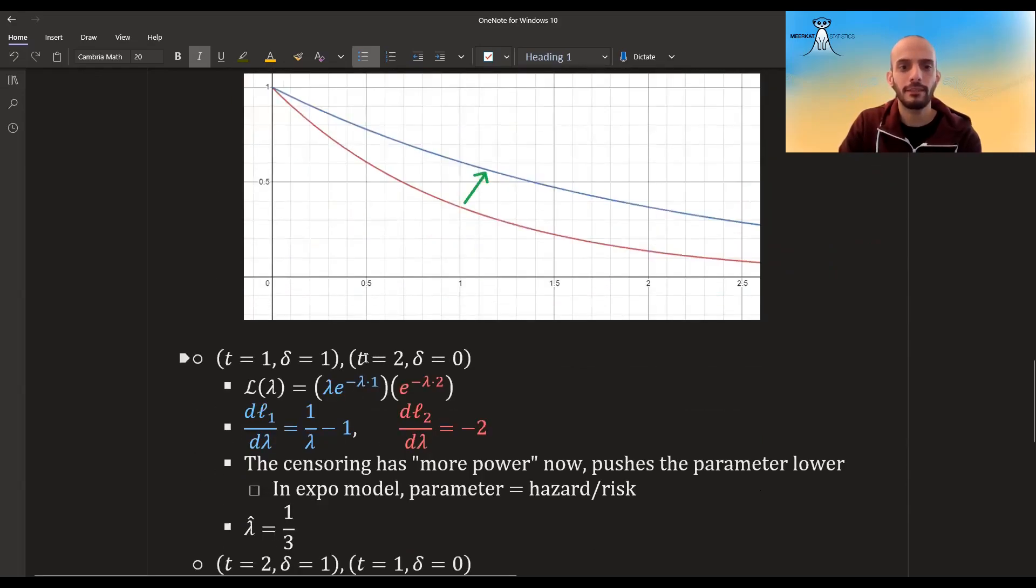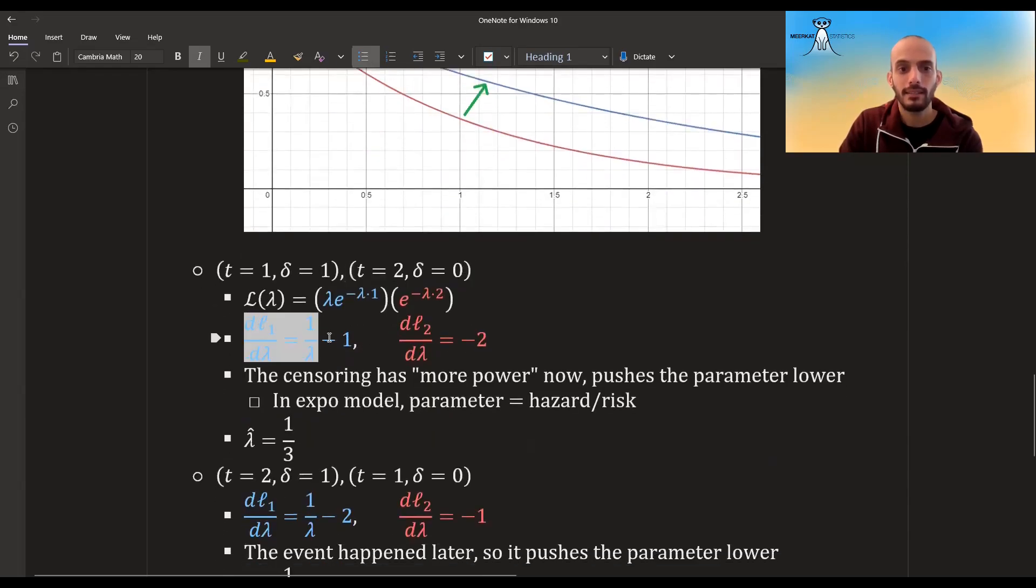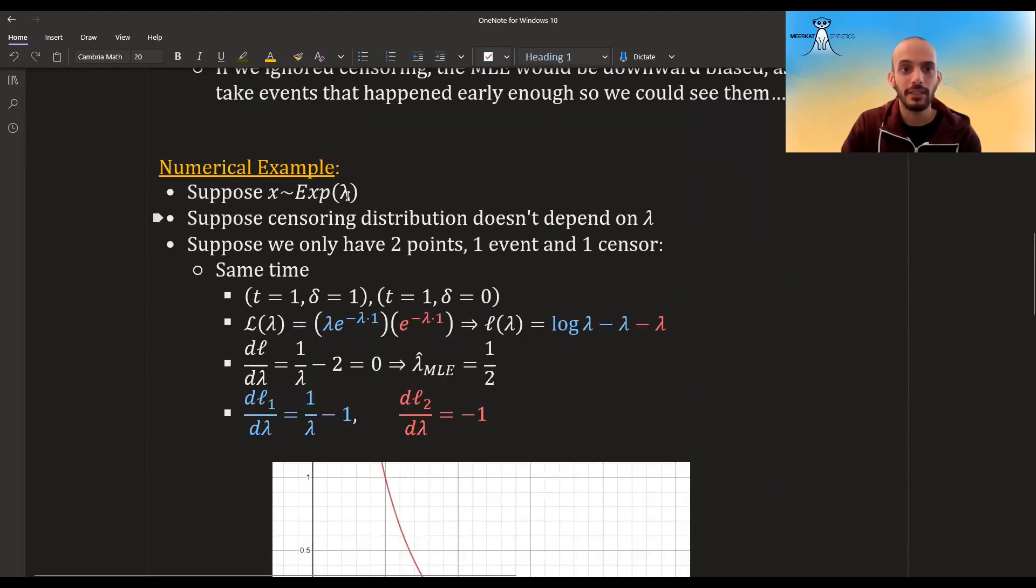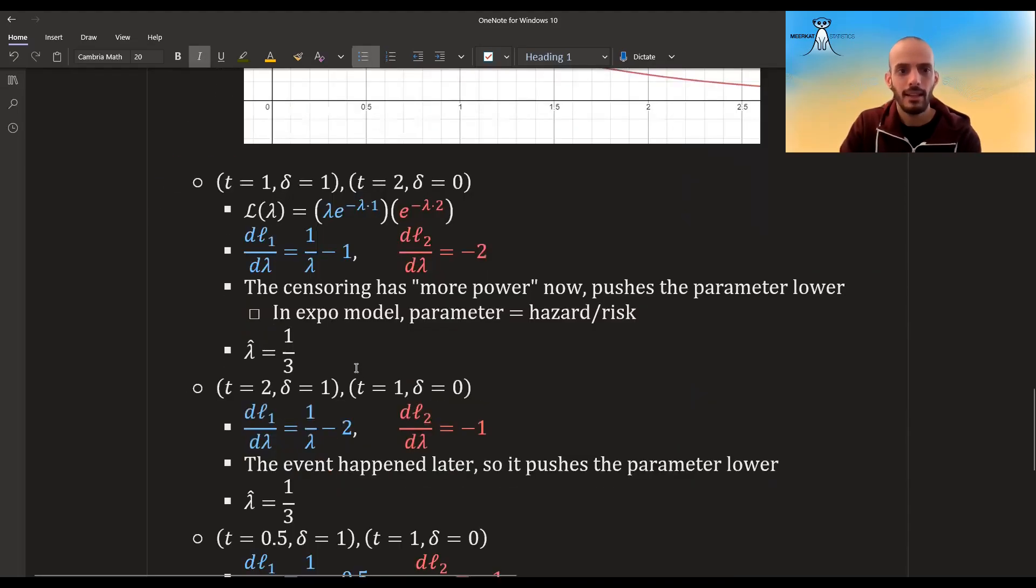What would have happened if we had the same event, but the censored observation would have happened at time two? Well, this would stay the same. Here it would change to minus two. So essentially the censored observation now has more power. It pushes the parameter to be lower. And remember in the exponential model, when we're supposing x is exponential, then the parameter is actually equal to the hazard or to the risk. The lambda here is actually the risk or the hazard.